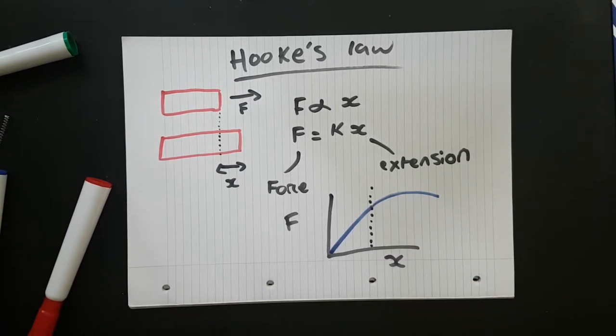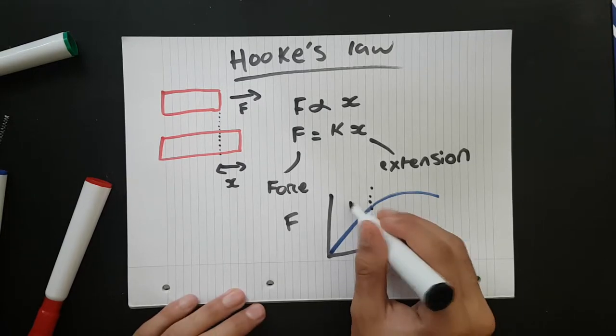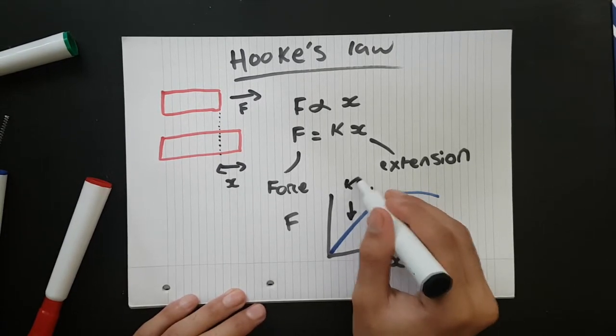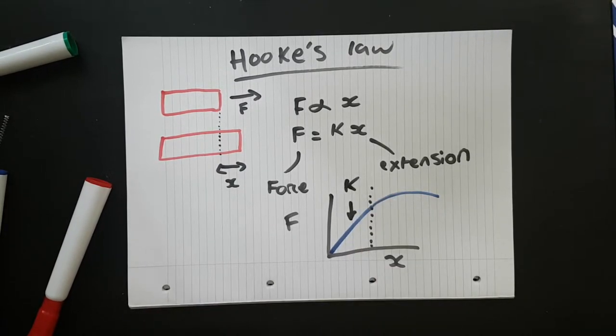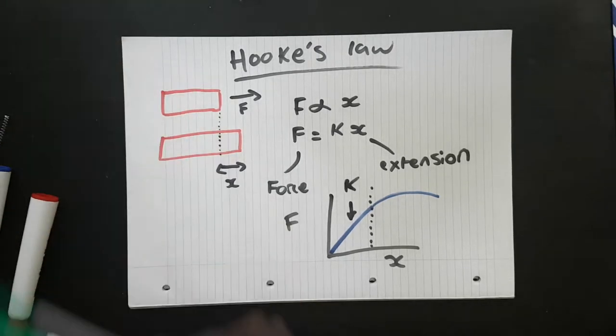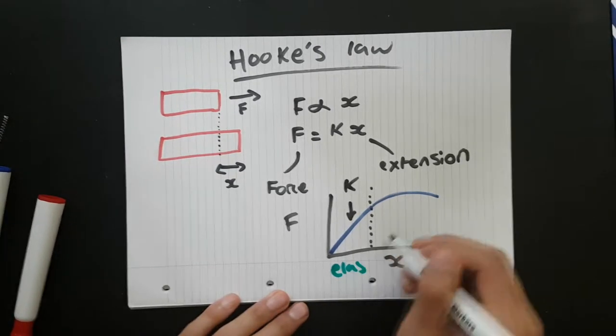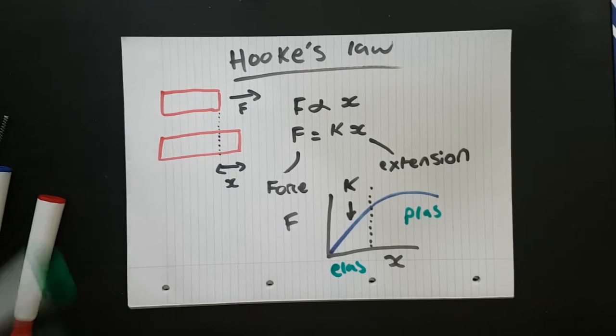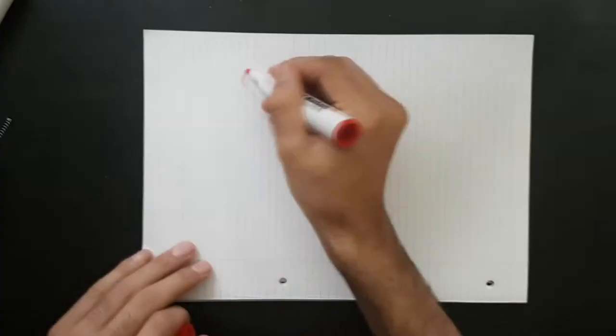When a material behaves elastically, they tend to have a linear relationship on the graph, as opposed to plastic deformations, where the relationship is non-linear and the deformations are permanent, meaning the object doesn't return to its original shape.